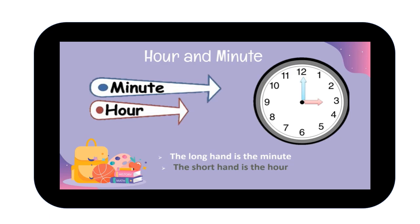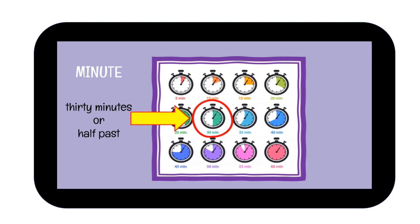You must remember this because later you will have to draw the short hand and the long hand correctly. Look here. In an hour, we have 60 minutes. And we have how many numbers in the clock? We have 1 until number 12. So if number 1, it shows 5 minutes; number 2 shows 10 minutes, and the list goes on.